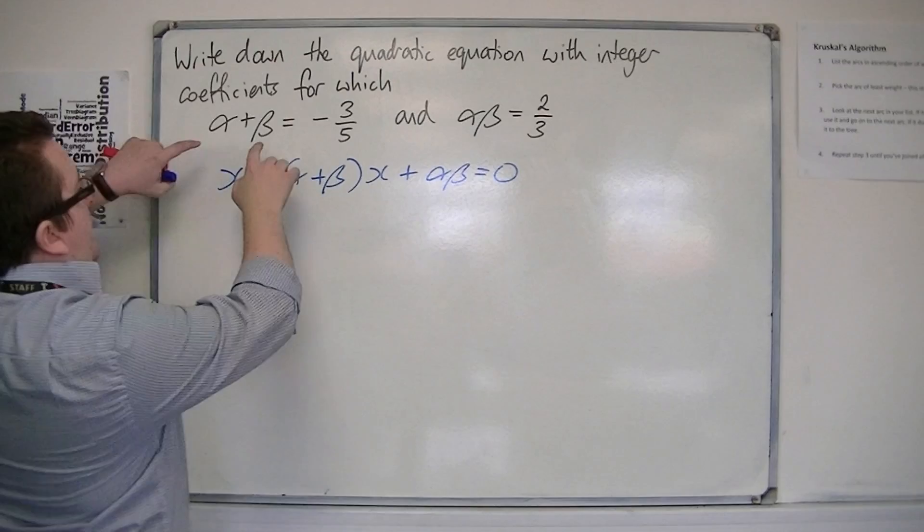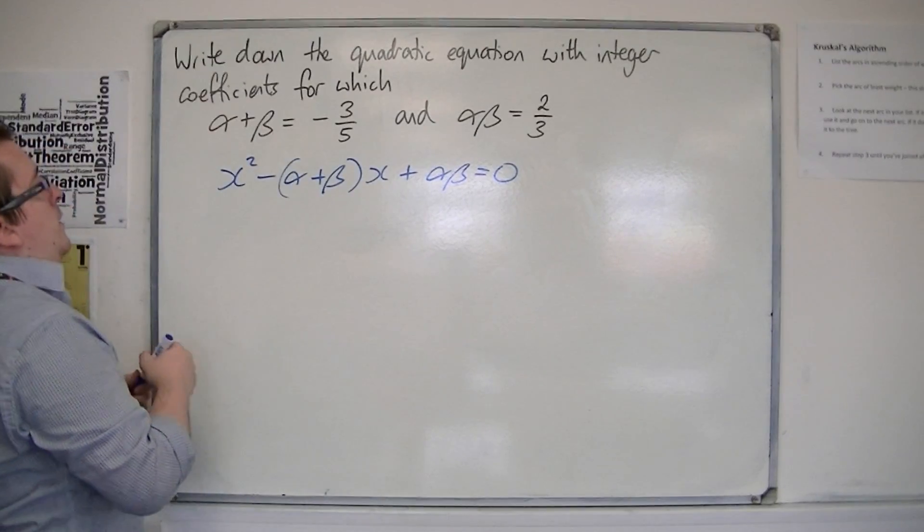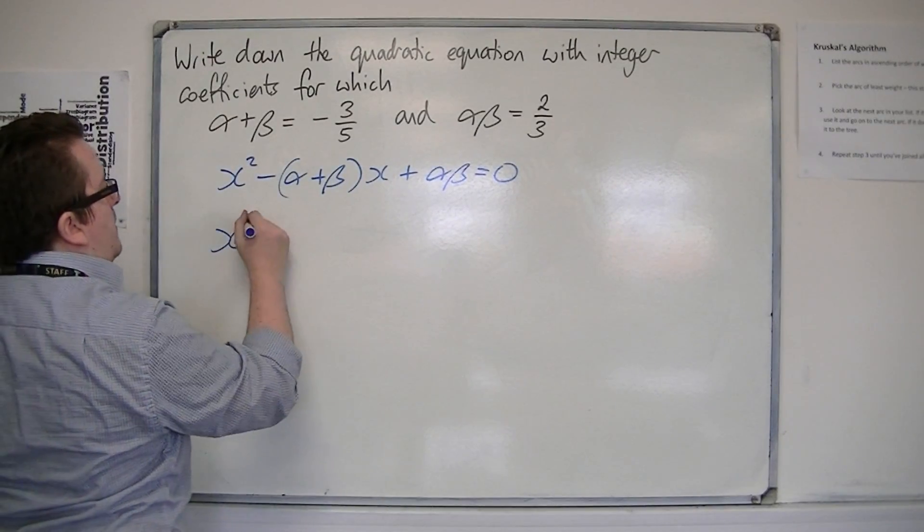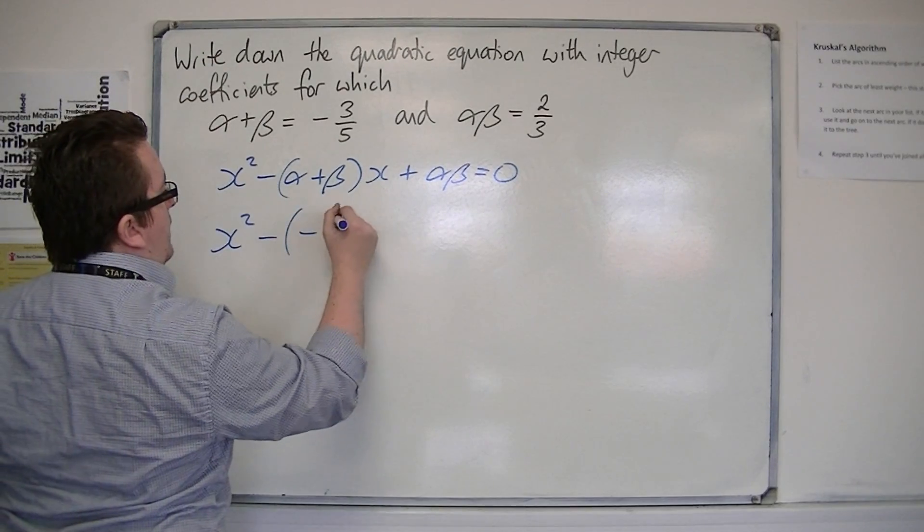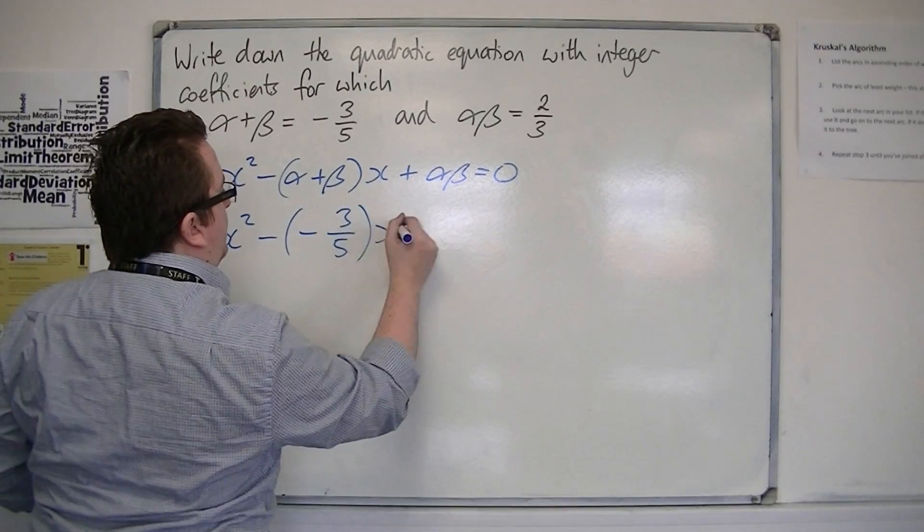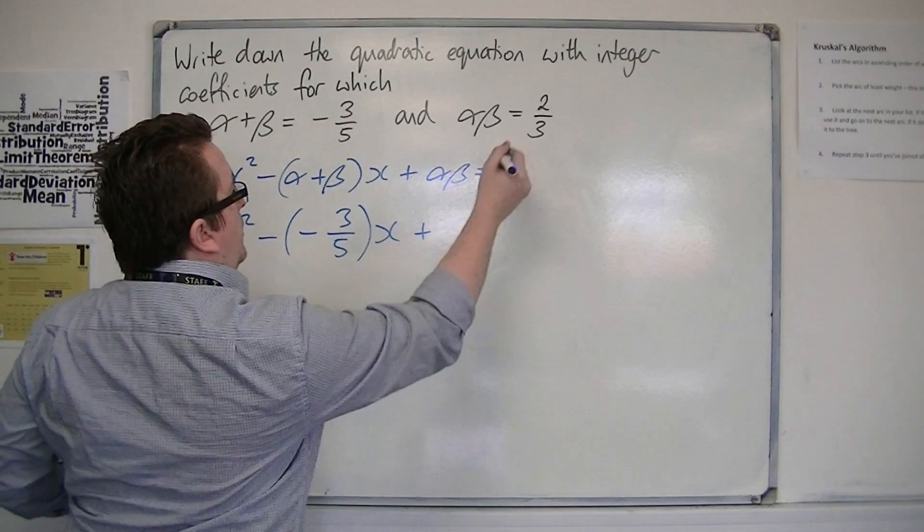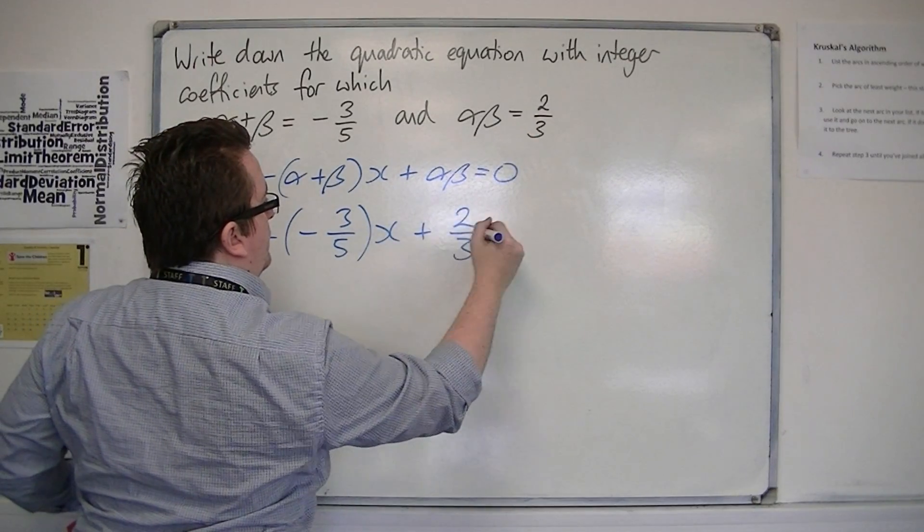So we have, if α + β is -3/5, we're going to have x² - (-3/5)x + 2/3 = 0.